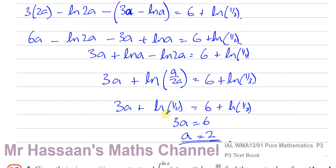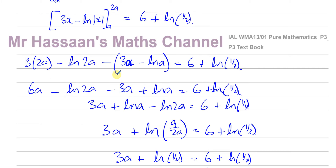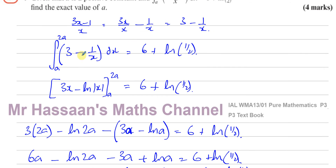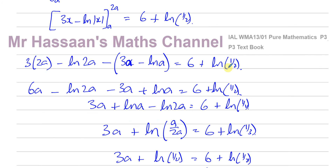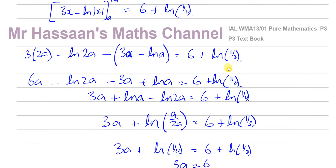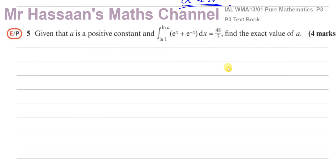So we found the value of a, and that's question 4 done. You start off by splitting it up into separate fractions, then integrating — remember the integral of 1 over x is ln(x), and we know that from the result that the differential of ln(x) is 1 over x. That's the answer to question number 4.